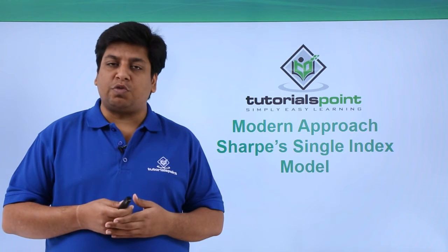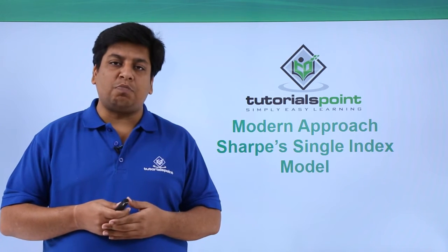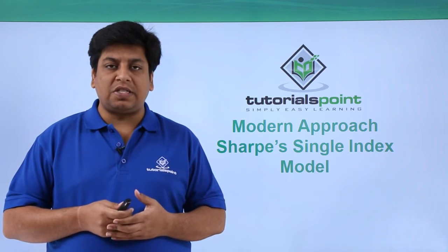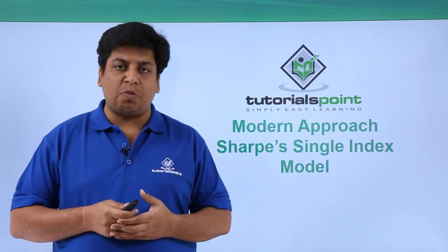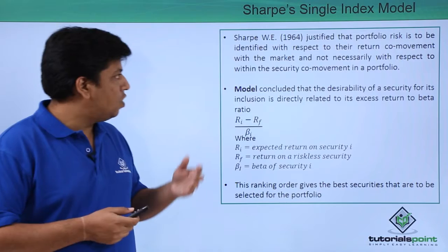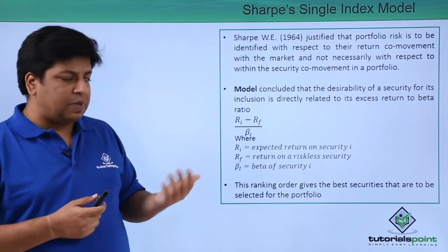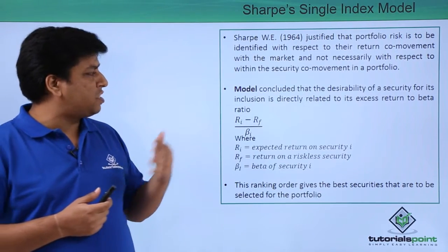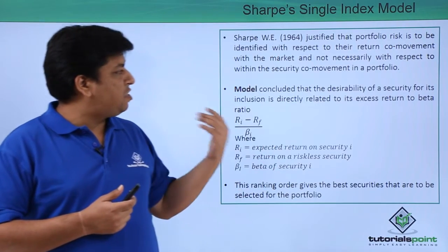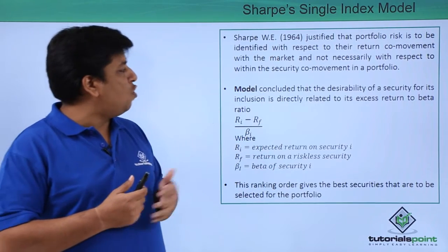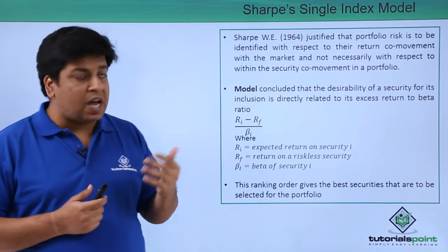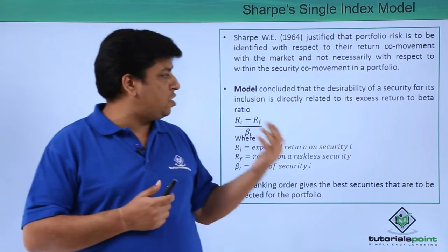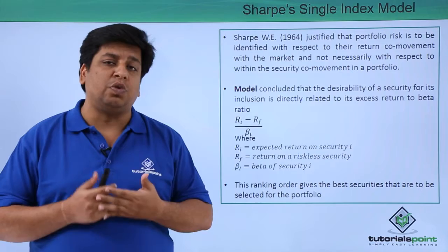The next model in our modern approach of portfolio selection is Sharpe's Single Index Model. W.E. Sharpe, in the year 1964, justified that portfolio risk is to be identified with respect to return co-movement with the market, and not necessarily with respect to within-security co-movement of a portfolio.